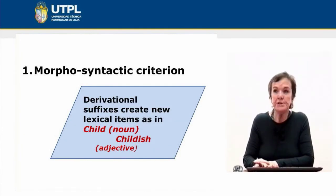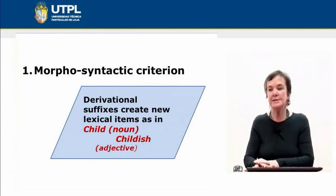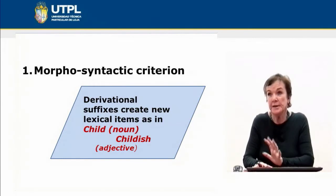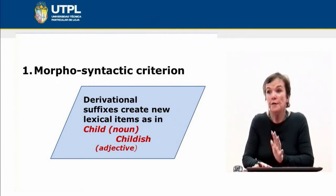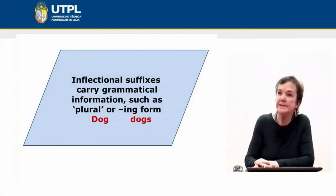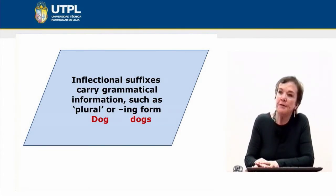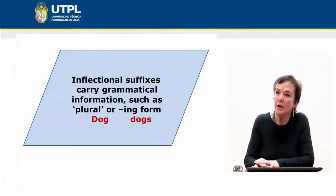Derivational suffixes create new lexical items. For instance, 'child' is a noun, but 'childish' is an adjective — so we are changing the category of the word from noun to adjective. On the other hand, inflectional suffixes carry grammatical information. For example, the plural of nouns: 'dog,' 'dogs.' Also, the -ing form for the participle form of verbs — for instance, 'work' or 'working.'